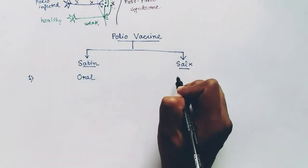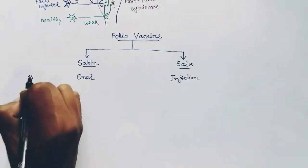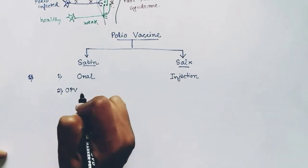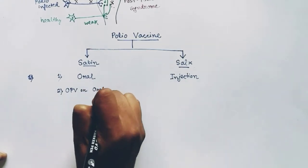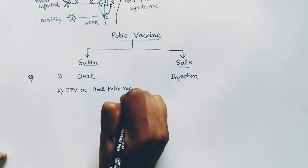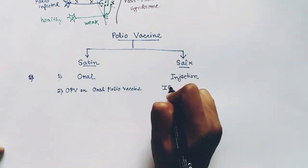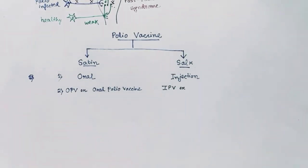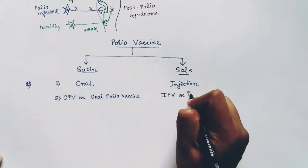The Sabin vaccine is the oral vaccine and the Salk vaccine is injected into the body. The Sabin vaccine is also called OPV or oral polio vaccine, and the Salk vaccine is also called IPV or inactivated polio vaccine.